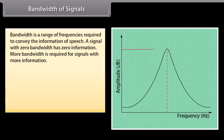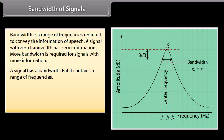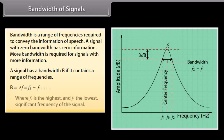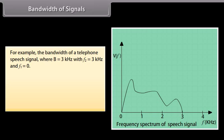Bandwidth is a range of frequencies required to convey the information of speech. A signal with zero bandwidth has zero information. More bandwidth is required for signals with more information. A signal has a bandwidth B if it contains a range of frequencies: B = ΔF = F2 − F1, where F2 is the highest and F1 is the lowest significant frequency. For example, the bandwidth of a telephone speech signal is B = 3 kHz, with F2 = 3 kHz and F1 = 0.